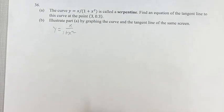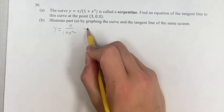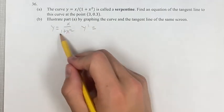First, we're going to want to find the slope of the tangent line, which we're going to do using the derivative. To find the derivative, we're going to use the quotient rule, since we have a fraction here.